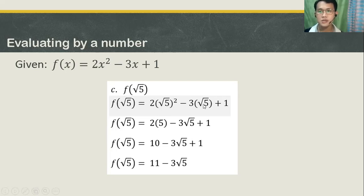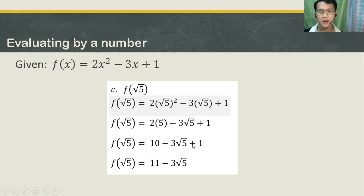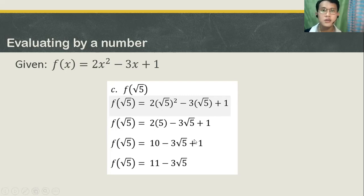Minus 3 times the square root of 5, that is 3 square root of 5, plus 1. 2 times 5, you get 10. Copy minus 3 square root of 5, plus 1. And then combine like terms — you can only combine similar terms.